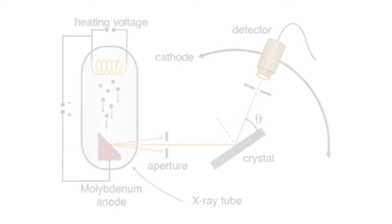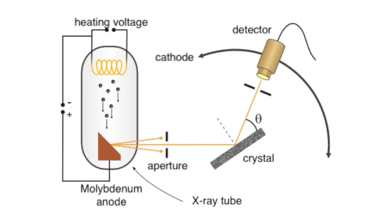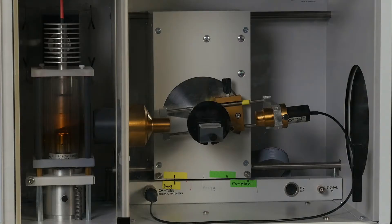The experimental setup consists of an x-ray tube with a molybdenum anode, a sodium chloride or lithium fluoride crystal as the scattering body, and a Geiger-Müller countertube which is mounted rotatively around the scattering body as the x-ray detector. The x-ray tube is operated at 35 kilovolts acceleration voltage and one milliampere tube current.